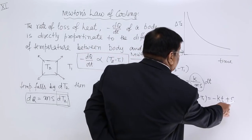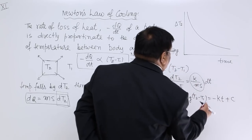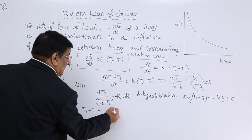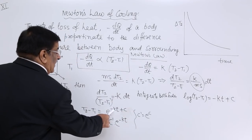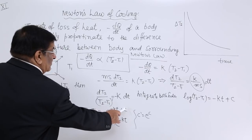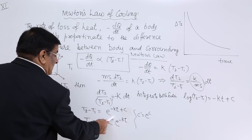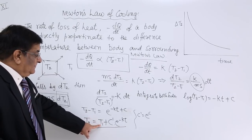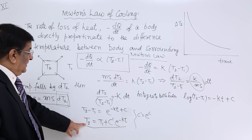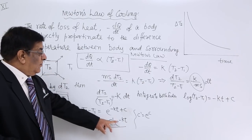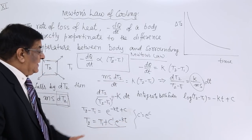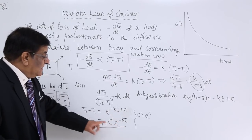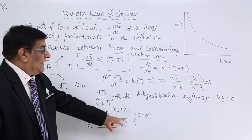If log of this quantity equals minus KT plus C, then T2 minus T1 equals e to the power (minus KT plus C), which means e to the power minus KT multiplied by e to the power C. Writing e to the power C as C-dash, we get T2 equals T1 plus C-dash·e to the power minus KT. If we know T1, T2, and K, we can always find T2 after any time T.